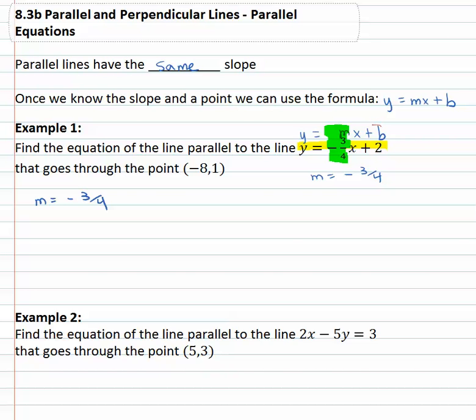Notice as we did this, we really didn't care what the b was. It doesn't matter what b is when we're talking about parallel and perpendicular. All we're looking for is the slope, which is negative three-fourths.